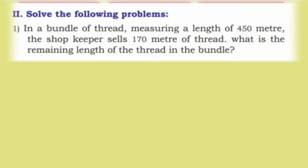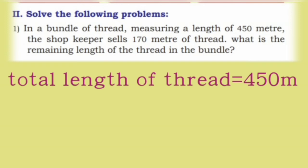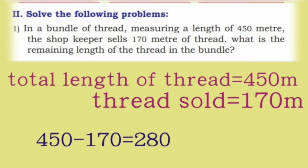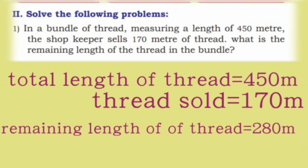Now second main section — let us solve the problems. First one: In a bundle of thread measuring a length of 450 meter, the shopkeeper sells 170 meter of thread. What is the remaining length of thread in the bundle? Total length of thread is 450 meter; thread sold is 170 meter. 450 meter minus 170 meter is 280 meter. So the remaining length of thread is 280 meter.